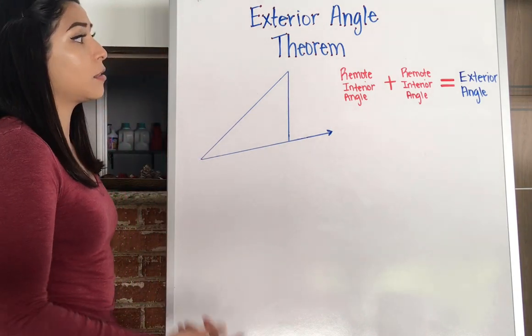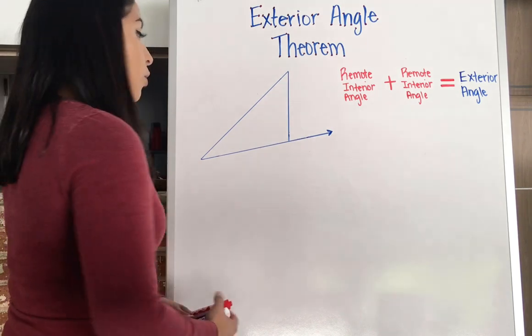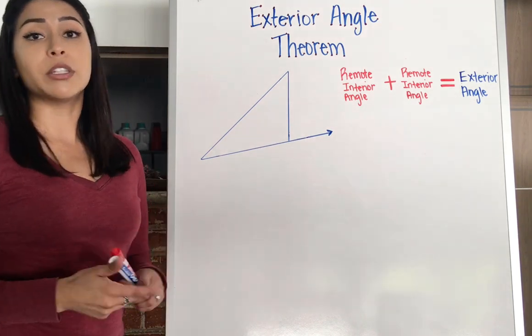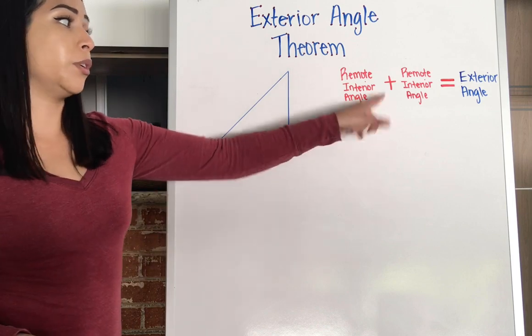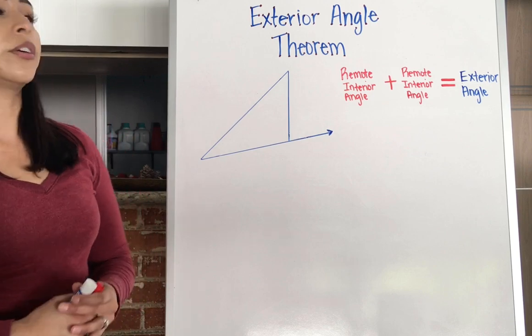So a fancy way to say that is the sum of the remote interior angles is equal to the exterior angle. So before you can understand any of that, you need to know what are remote interior angles, like which ones are those, and what is the exterior angle, which one is the exterior angle.